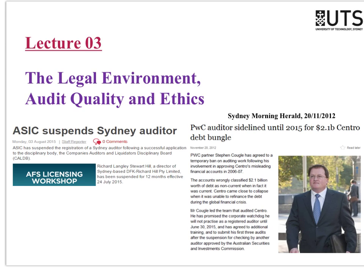The facts that led to this decision: the audit related to a company called Centro — they're in the business of shopping centres, like Stocklands or Westfield. What had happened is that the company had classified quite a significant amount of their liabilities as non-current. As we all know, non-current means payable in a period greater than 12 months. But these particular liabilities actually weren't non-current — they were current, due within the next six months. The value of those liabilities? $2.1 billion. They had misclassified $2.1 billion worth of liabilities as non-current when they were actually due in the next six months.